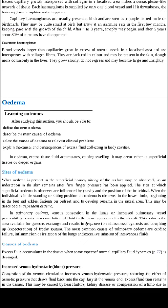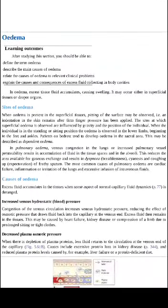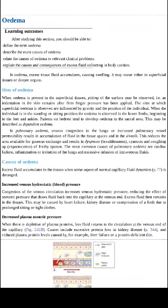Cavernous hemangiomas involve blood vessels larger than capillaries that grow in excess of normal needs in a localized area and are interspersed with collagen fibers. These blood vessels are larger than capillaries, again dark red in color. They may be present in the skin but are most commonly found in the liver.